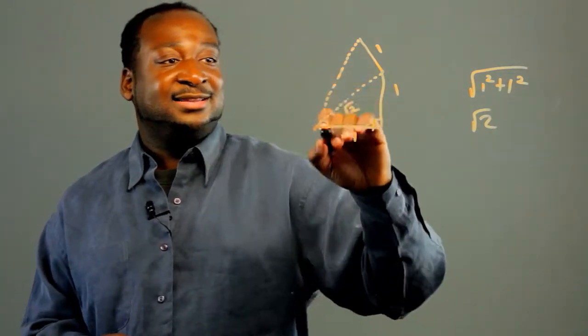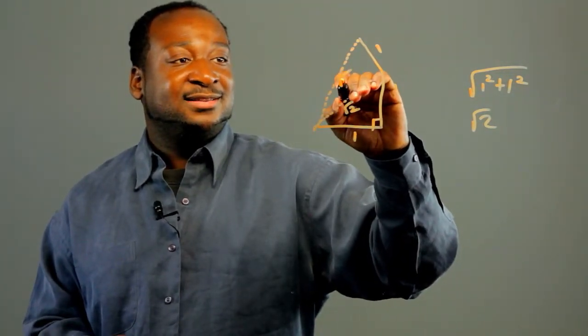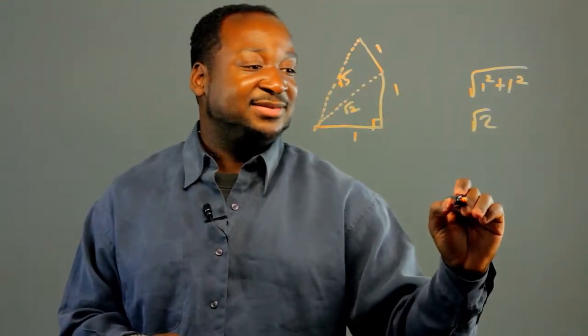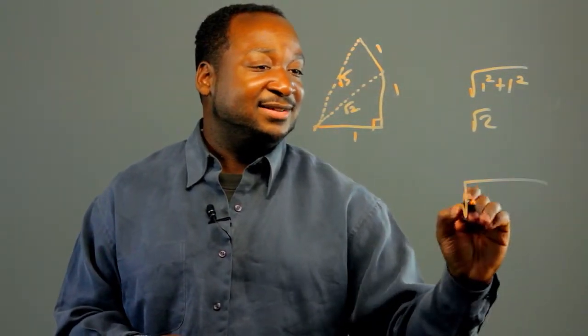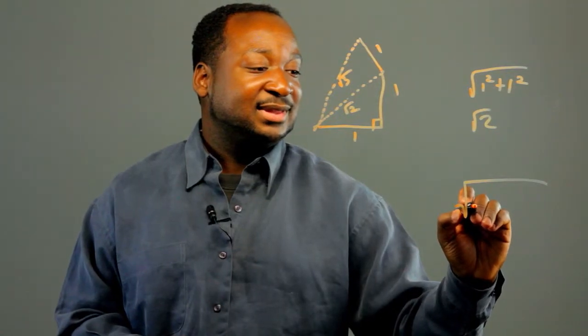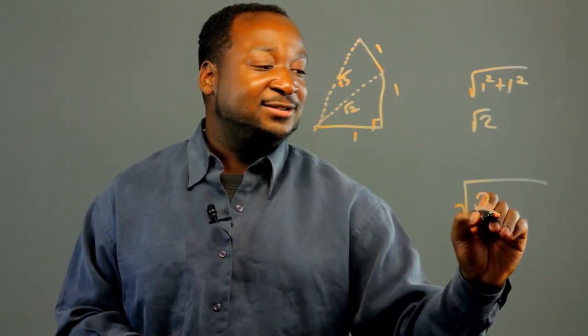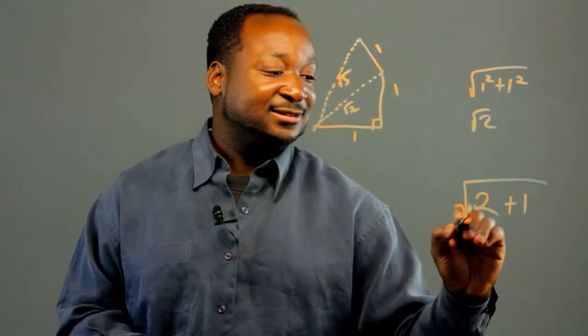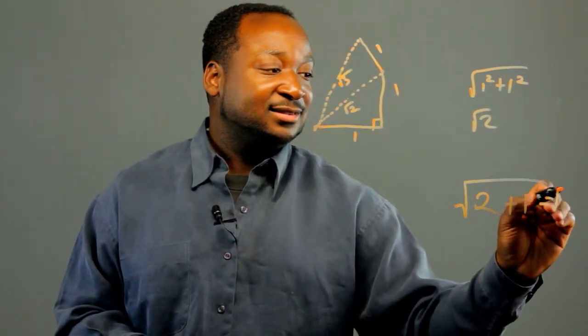And the length of this is going to be the root of 3, because this hypotenuse is equivalent to the square root of the root of 2 squared, which is 2, plus 1 squared is 1. So that's equivalent to the root of 3.